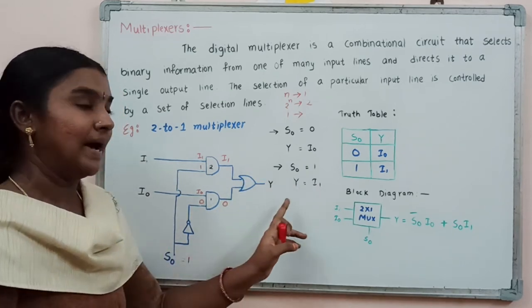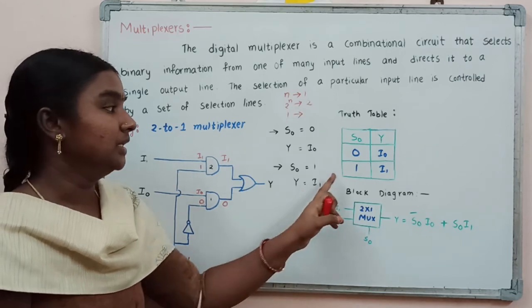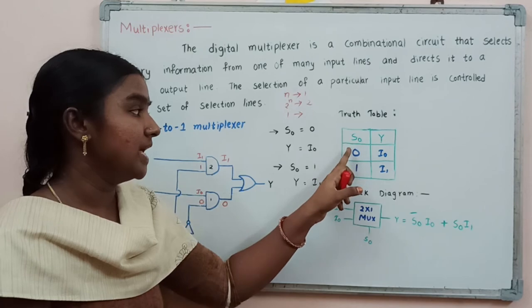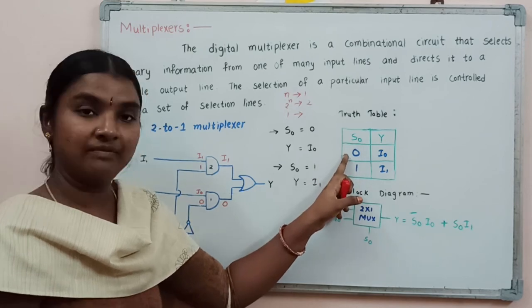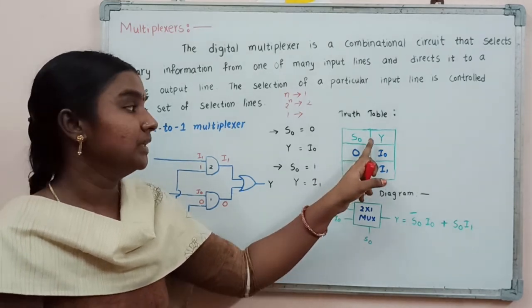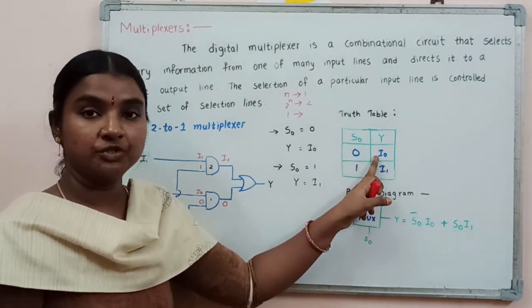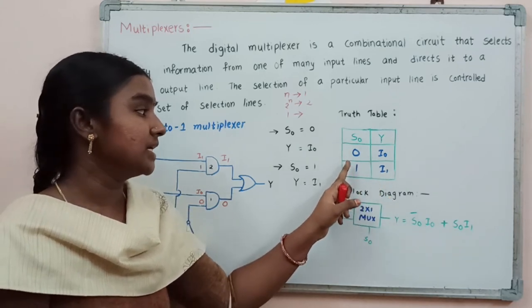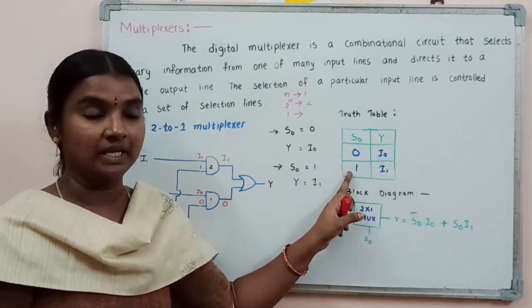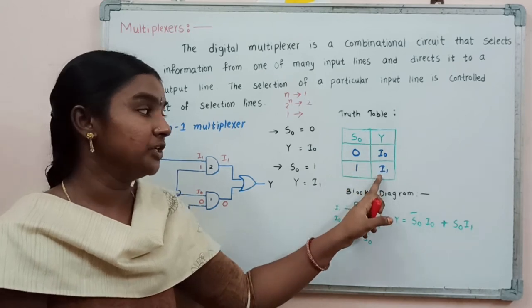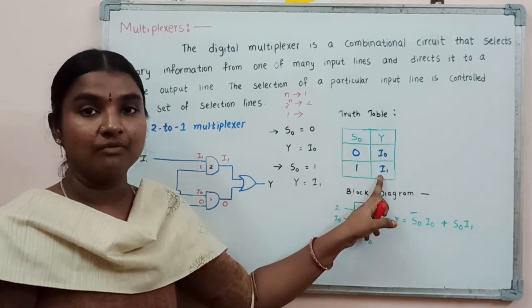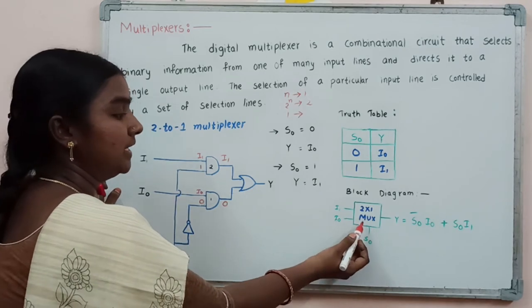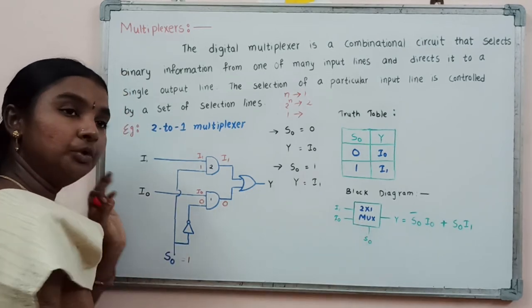From this explanation, we can write the truth table: when selection line s0 equals 0, the output y equals i0; and when selection line s0 equals 1, the output y equals i1.